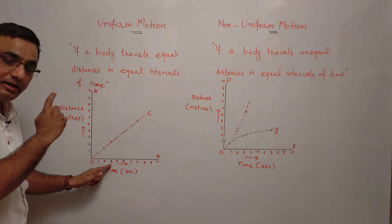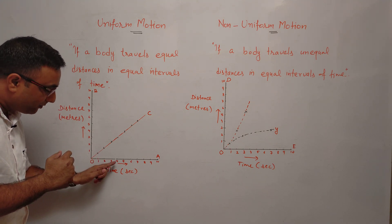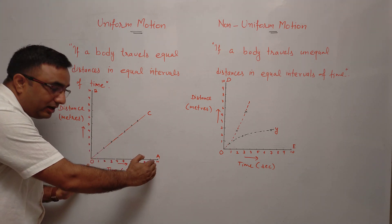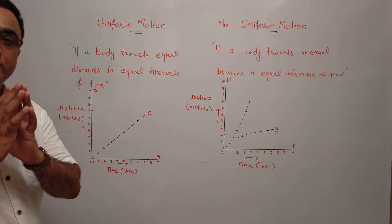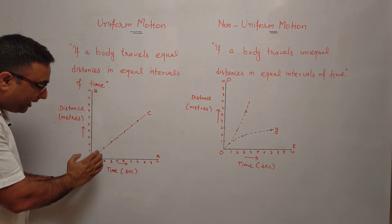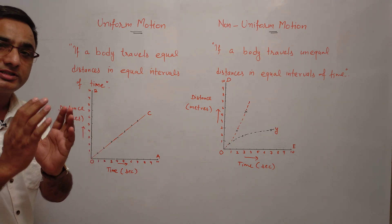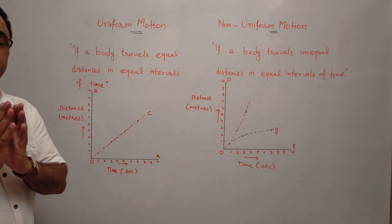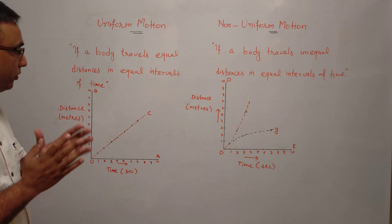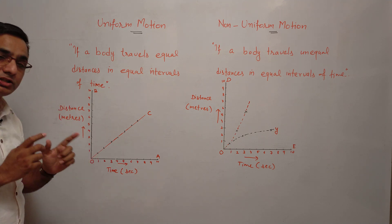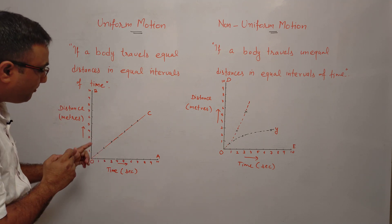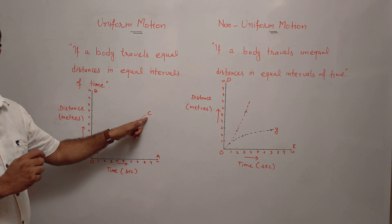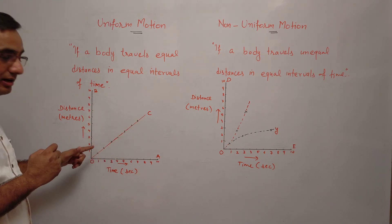दो से तीन second में equal distance travel की, तीन से चार second में equal distance travel की। Total जितने भी time में distance travel हुई है, regular intervals of time में जो distance travel की है वो equal amount में है। तो हम कहेंगे यह motion uniform motion है। Uniform motion के case में distance-time graph में जो line है वो straight line दिखाई देगी, जैसे कि OC यहाँ पर दिखाई दे रही है।